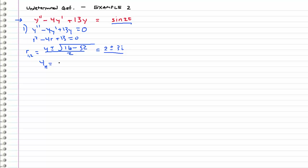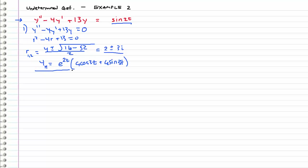Since we have complex roots, we can go straight into our answer. The homogeneous solution is e to the 4t — we always take the real part first and multiply everything by — times c1 cosine of 3t plus c2 sine of 3t. So we have this as our homogeneous solution.